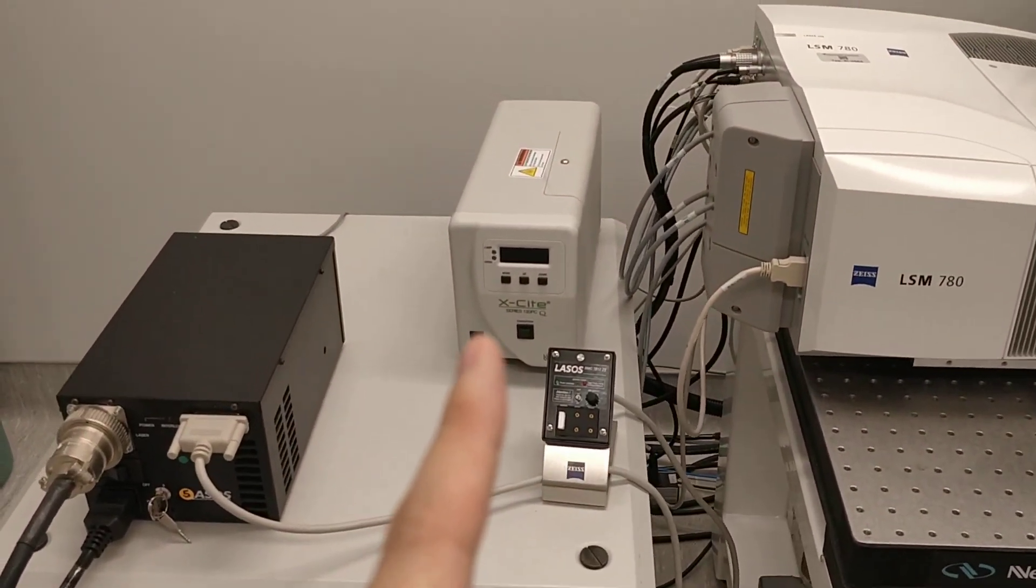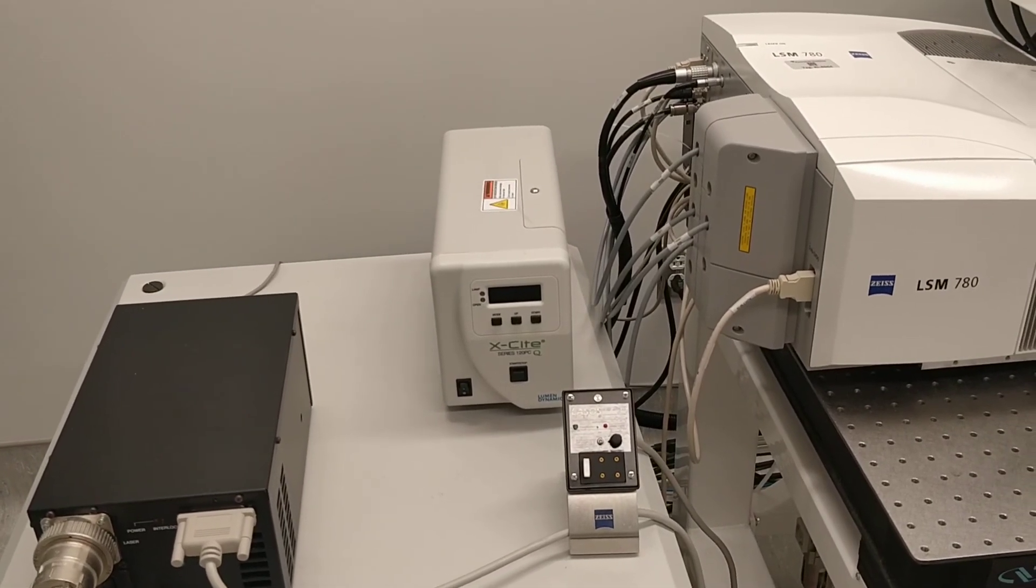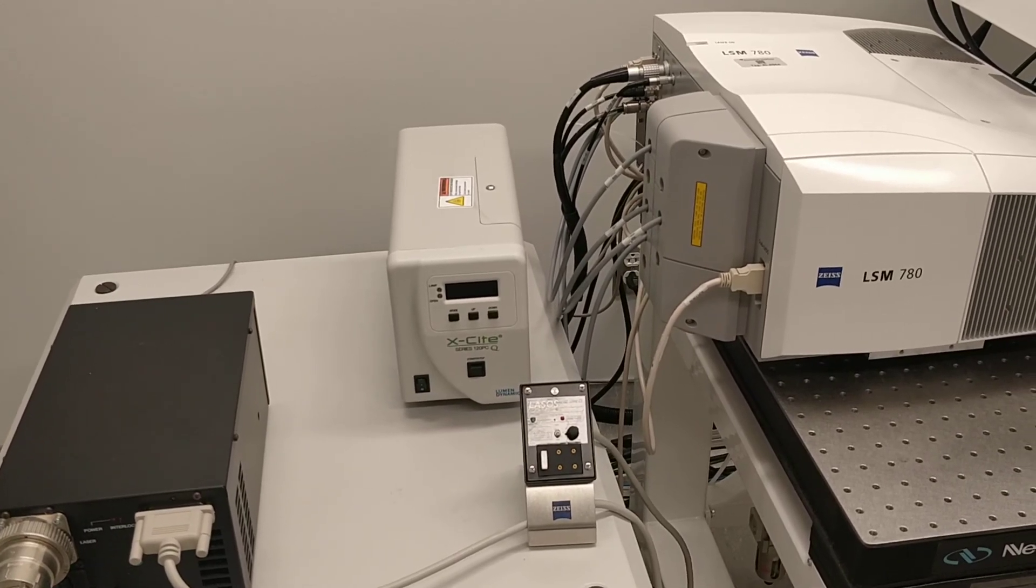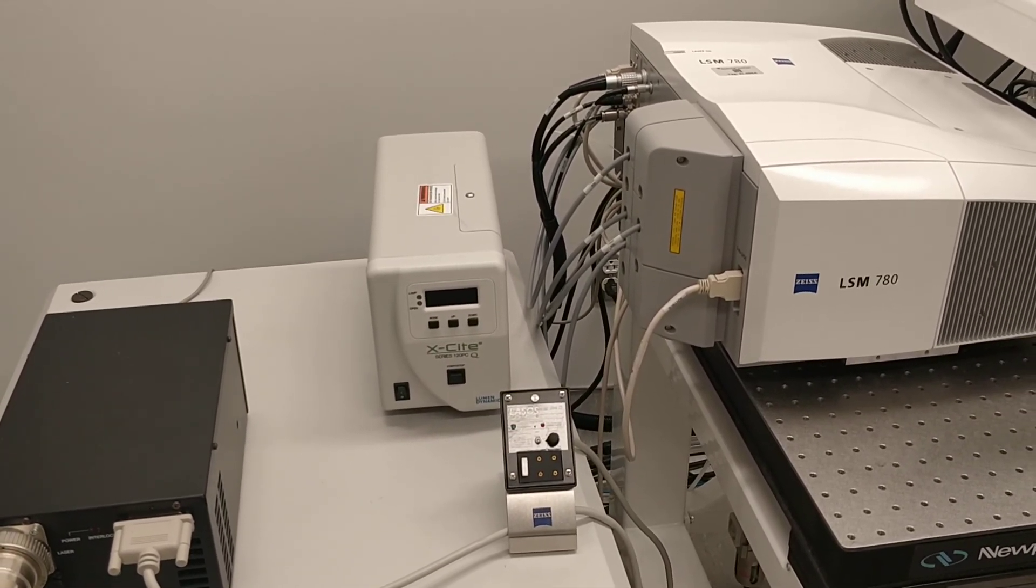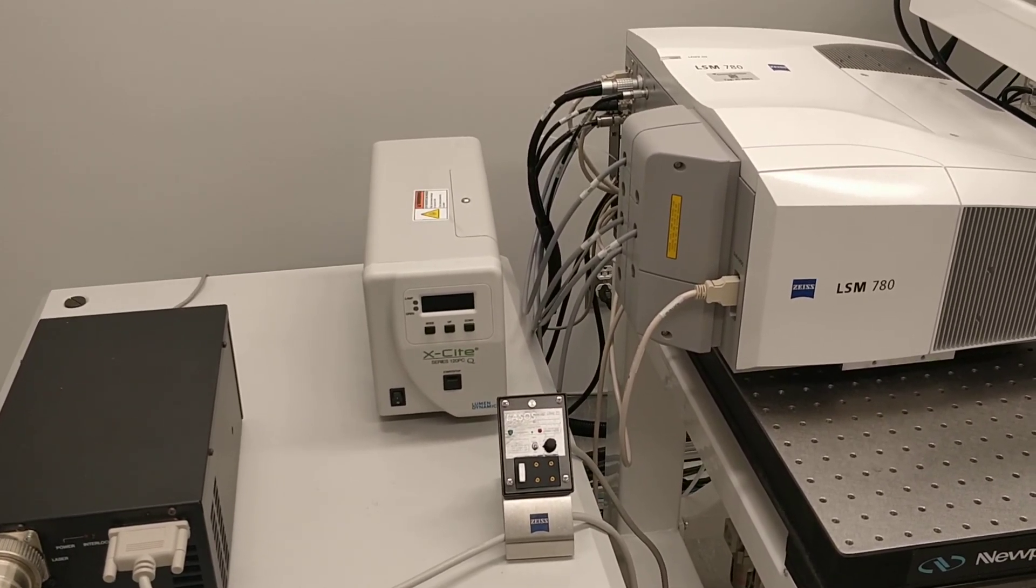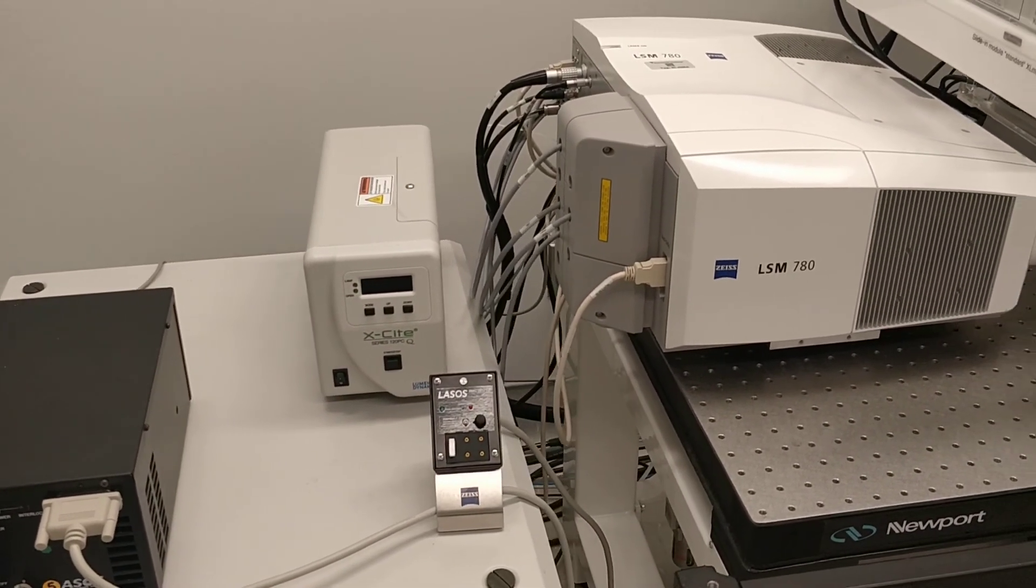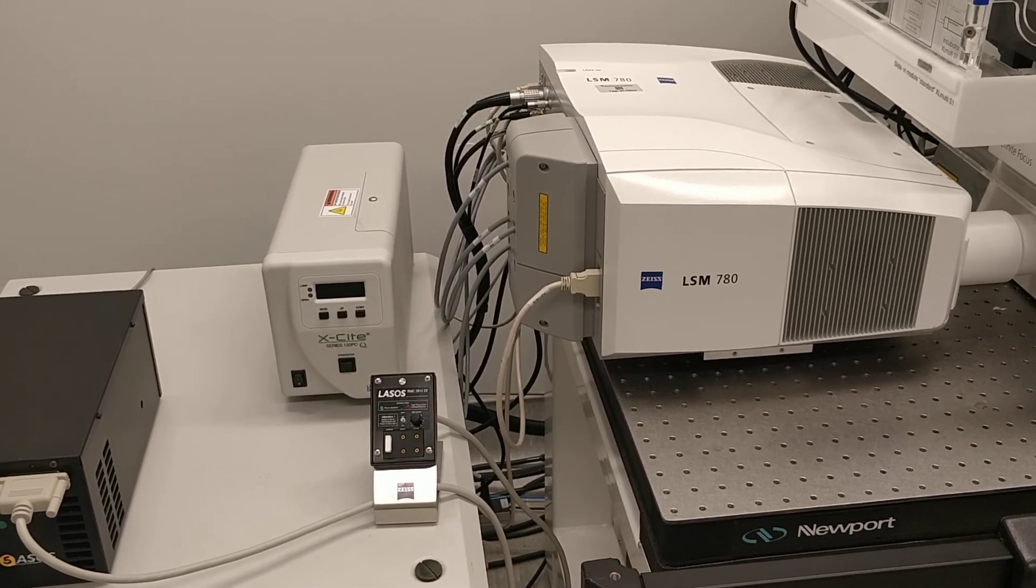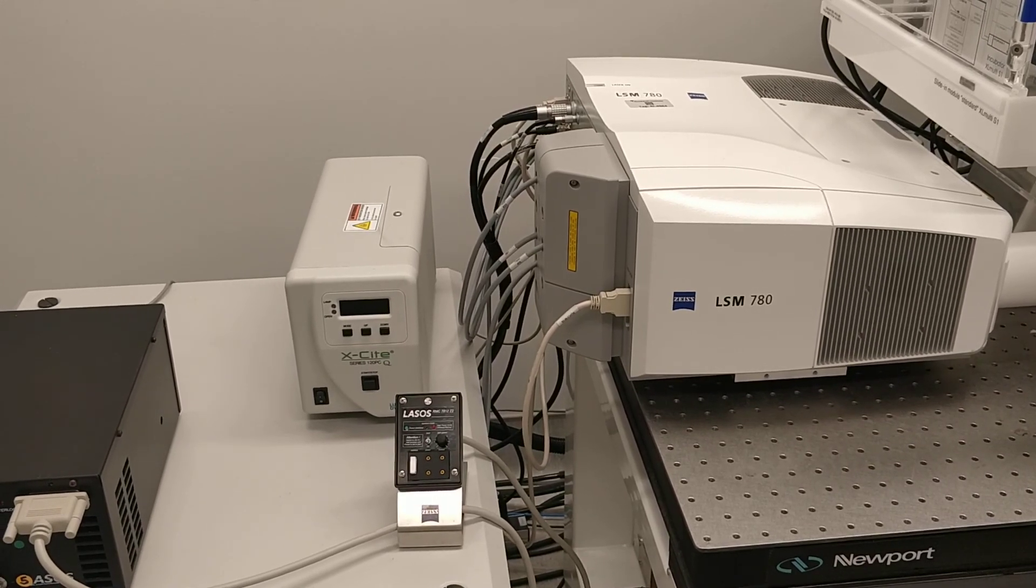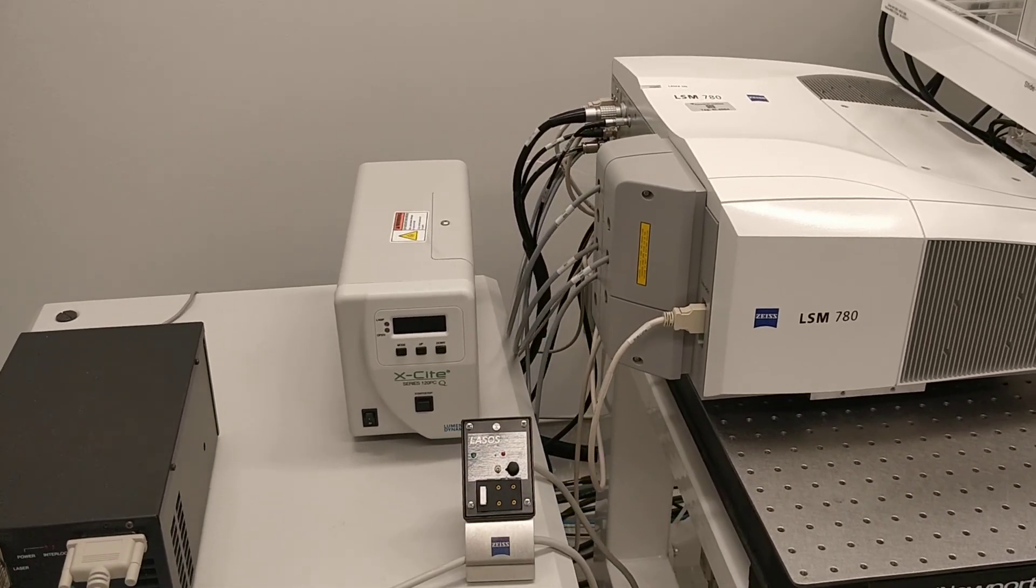Now the XITE, this one is for your Mercury lamp. So if you know Confocal use laser to image, but obviously our eye cannot see lasers, so we still need to use a lamp to visualize. And that lamp light source is this XITE. So basically it is a white light bulb that has a wide range of wavelengths, and then there are different filters inside the microscope that would filter out a certain range to allow you to see your sample.